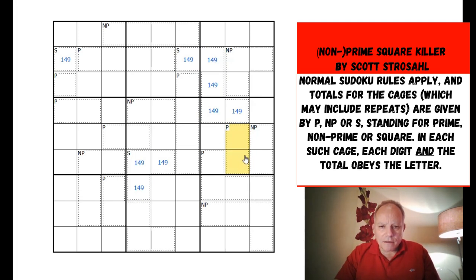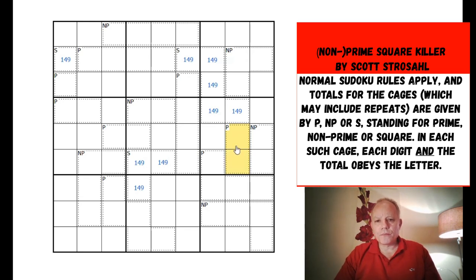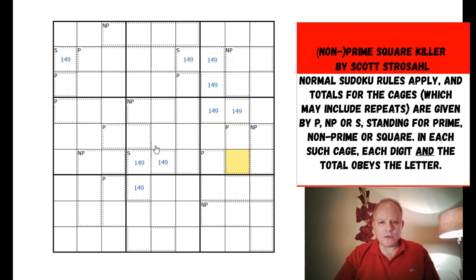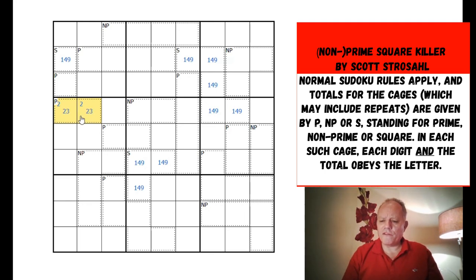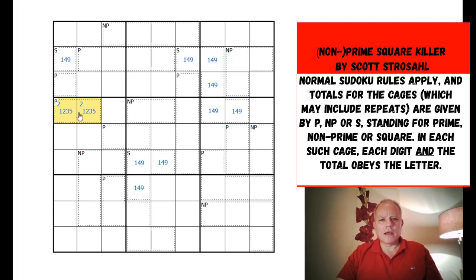Here's something interesting from a two-cell prime cage. Any prime number more than two is odd. To make a prime total from two primes, one must be odd and one must be even. There's only one even prime and that's 2. So this prime cage has a 2 in it, and it must go with either 3, 5, or 1 - giving totals of 3, 5, or 7. It can't go with 7 because 2+7=9 which isn't prime.